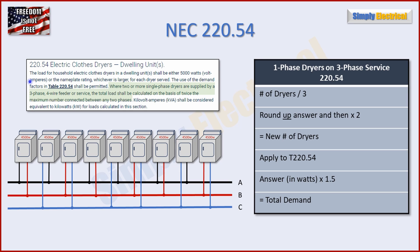Let's go back to the text of 220.54 and read the part we skipped. It says: where two or more single phase dryers are supplied by a three phase four wire feeder or service, the total load shall be calculated on the basis of twice the maximum number connected between any two phases. In other words, we need to figure out how many dryers maximum are connected between any two of the three phases. A single phase dryer connects to only two phases, so each dryer uses two of the A, B, C phases.